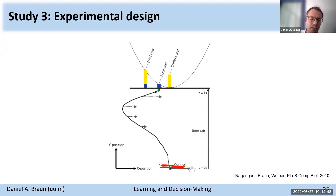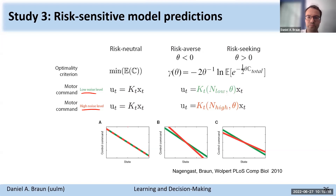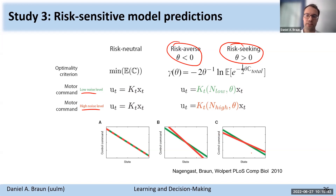This is exactly what the optimal controllers predict. In the risk-neutral case, control gains remain exactly the same across the two noise levels. However, if you are risk-averse, when variability increases you increase your control gains — the extra noise acts like an adversary trying to harm you. In contrast, if you're risk-seeking, you reduce your controls because you treat the extra noise as beneficial to you.